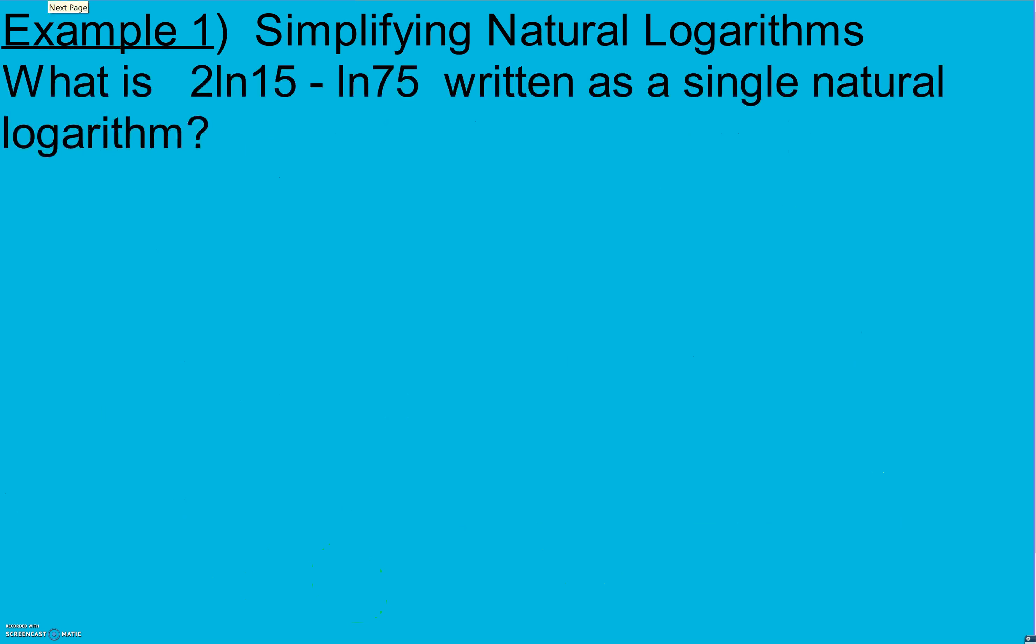Example 1 is simplifying natural logarithms. We're going to do a lot of this the exact same way as we did in section 7.5. The only difference is instead of having log base some random number, we have log base e which is ln. But our rules apply the same way. So here I can take this 2 as an exponent: ln of 15 squared minus ln of 75. Now this subtraction we're going to write as division: ln of 15 squared divided by 75. We can take that 15 squared as 225 divided by 75 and we get ln of 3. One single natural logarithm.